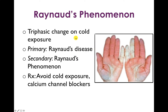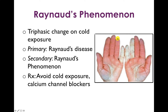Raynaud's phenomenon is a triphasic color change of the hands or feet on cold exposure. First you get hyperemia, so the fingers turn red. Then you get vasoconstriction, so the fingers blanch and turn white. And finally, you can get a blue coloration from long-term tissue hypoxia.